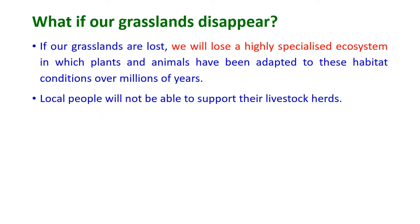What will happen if our grasslands disappear? If grasslands are lost, we will lose a highly specialized ecosystem in which plants and animals have been adapted to these habitat conditions for millions of years, and local people will not be able to support their livestock herds.